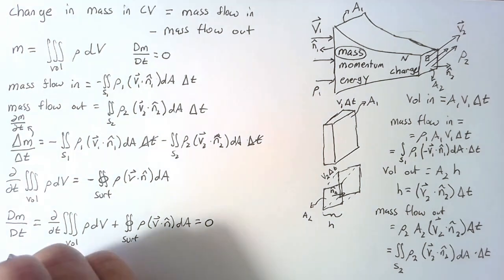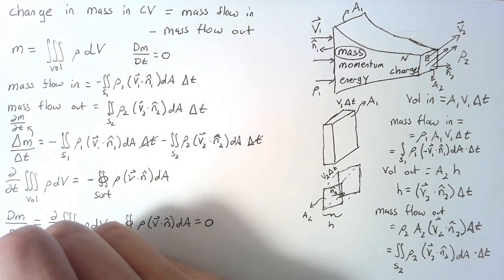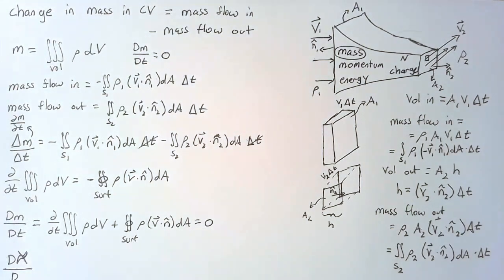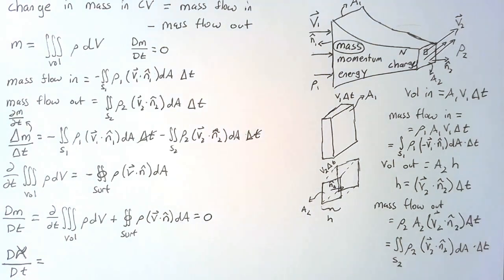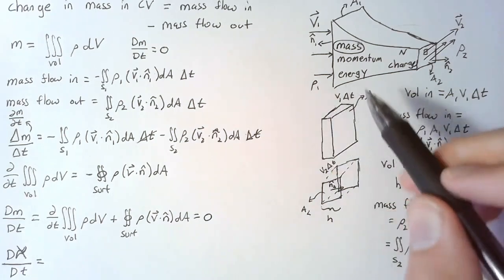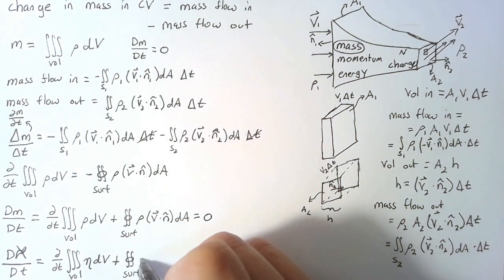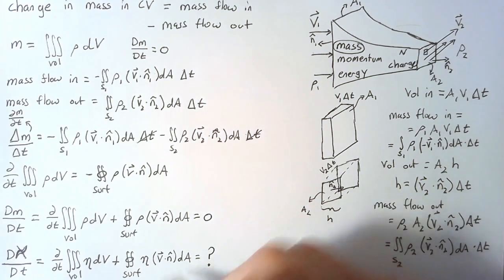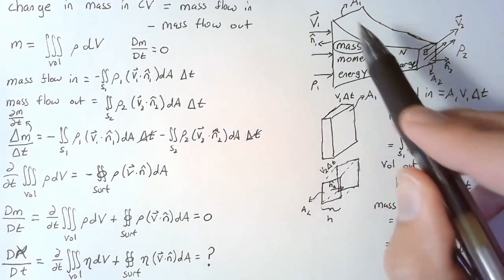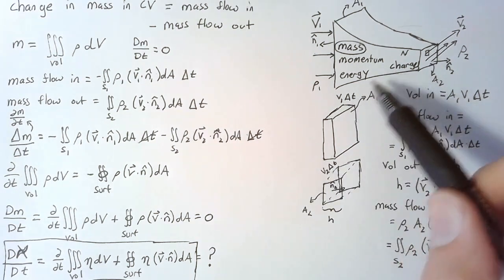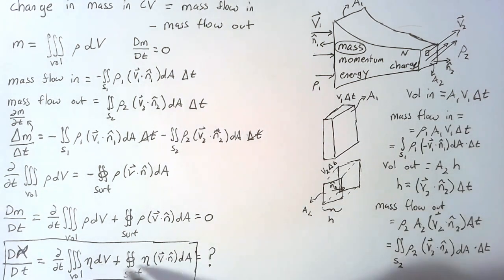But we can write that the change of some extensive property, I'm going to call this aleph. Aleph is a Hebrew letter, which is nice because it doesn't get in the way of any of the Greek letters we usually use. But I'm using this to mean some extensive property, something like mass, momentum, and energy that changes as we change our volume. And this is going to be equal to the time derivative of this integral of the intensive property, which I'm just going to use eta for. The right hand side of this equation will depend on what exactly our extensive property is and what our domain looks like. This concept right here, where we track some extensive property and split it into the change with respect to time and the change due to things coming in and out, this works for anything. And it's also the foundation of a lot of analyses for fluid dynamics.